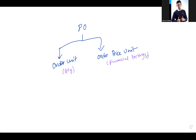The order unit — the source for it: if you create a PO with reference to a contract, we call it a release order, so it will take from the contract. If there is no contract, it will take from the purchase info record. If the purchase info record is not maintained, then it will take from the material master purchasing view, which has a field called order unit. In my experience, order unit and order price unit are both the same in most cases.